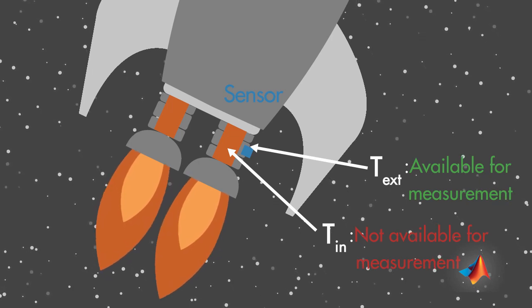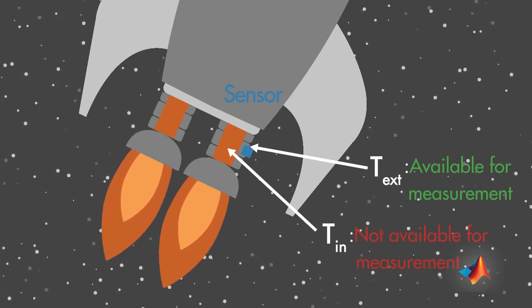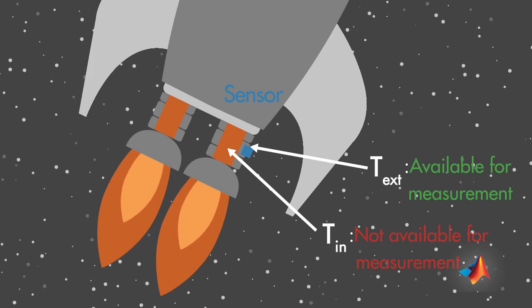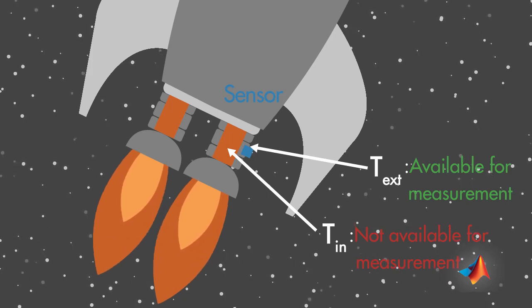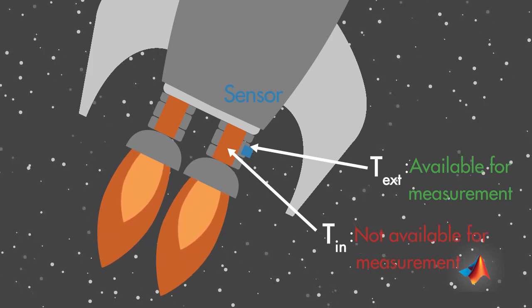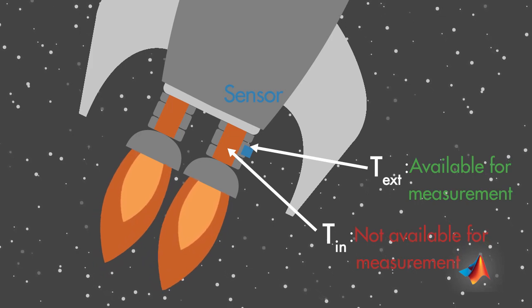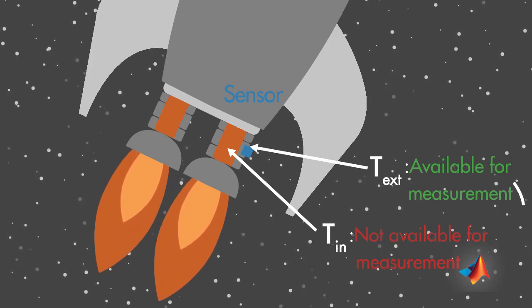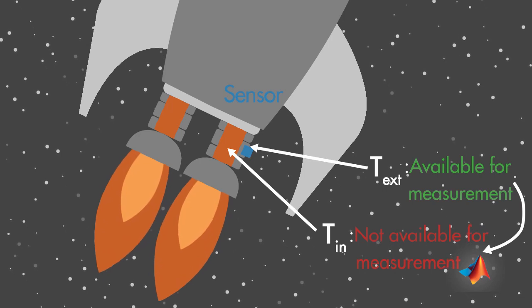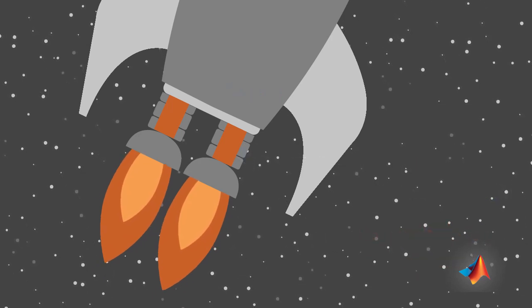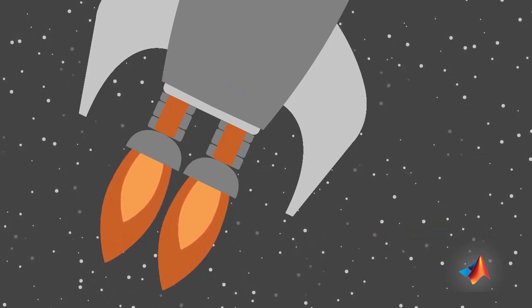In this situation, you can use a Kalman filter to find the best estimate of the internal temperature from an indirect measurement. This way, you are extracting information about what you can't measure from what you can. Now that you know the solution to your problem, you can continue your journey to Mars.